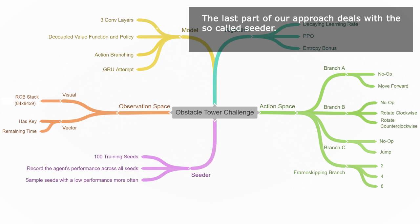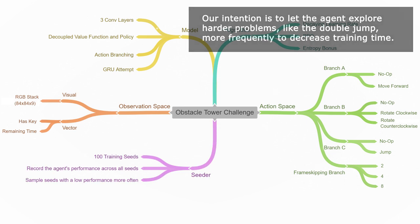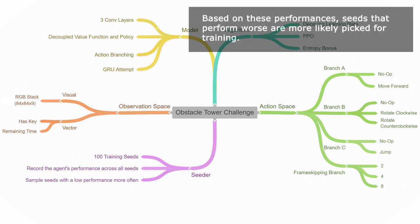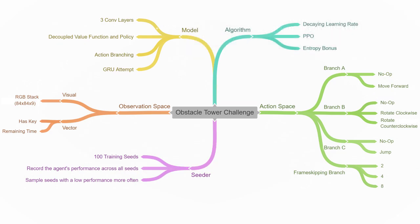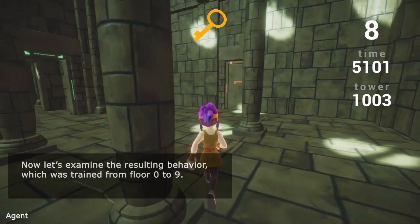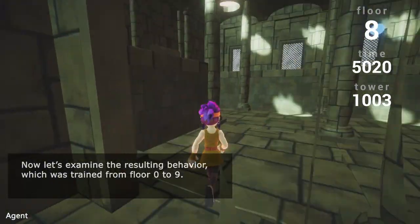The last part of our approach deals with the so-called seeder. Our intention is to let the agent explore harder problems like the double jump more frequently to decrease training time. The seeder monitors the agent's performance across 100 tower seeds at an episode window of 10. Based on these performances, seeds that perform worse are more likely picked for training.